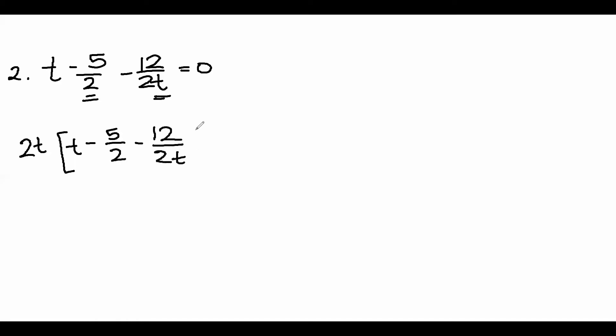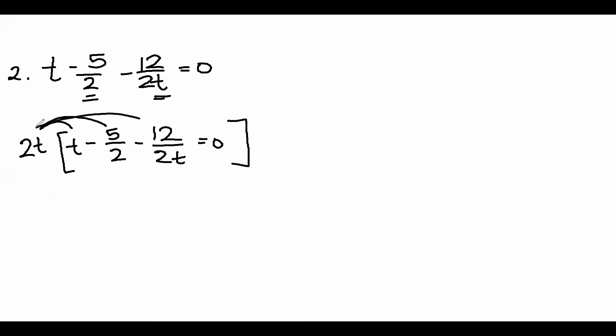So we now have the equation and we will multiply all terms by 2t. So we have 2t squared minus 5t minus 12 is equal to 0. Let's use the quadratic formula to find the answer or the roots of the equation.